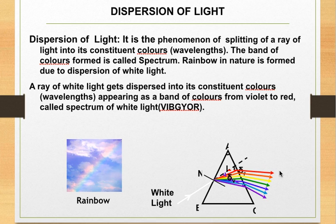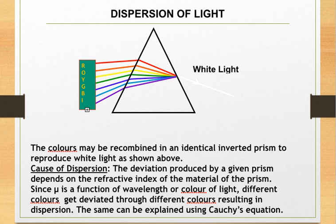A ray of white light gets dispersed into its constituent colors or wavelengths appearing as a band of colors from violet to red. This band of colors is called the spectrum of white light. We know that colors are violet, indigo, blue, green, yellow, orange, and red in that order. The colors of white light which we obtained can be recombined by using an inverted prism to get back white light.